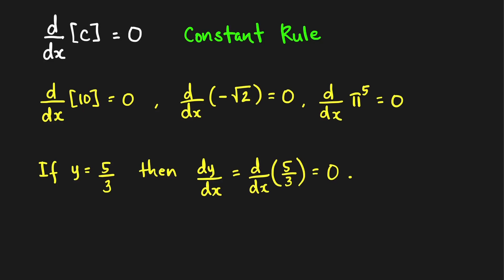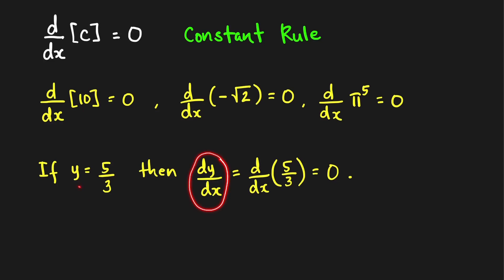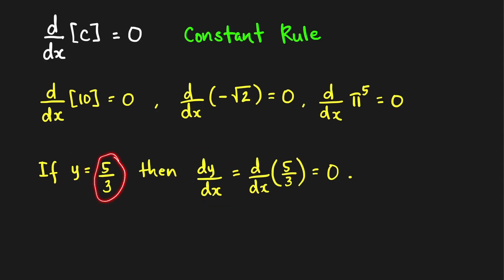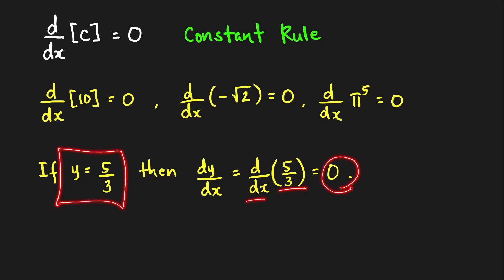Last example: if we have y equal to 5 over 3, then the derivative of y with respect to x — taking the derivative of both sides — the derivative of the left-hand side can be denoted by dy over dx (Leibniz notation), and it is equal to the derivative of the right-hand side. But the right-hand side is just a constant, so its derivative with respect to x is just equal to 0. The graph of this is just a horizontal line, so the rate of change at any point is equal to 0.